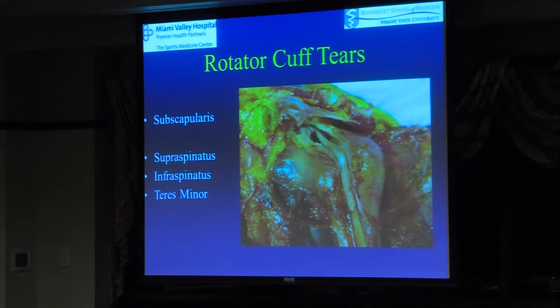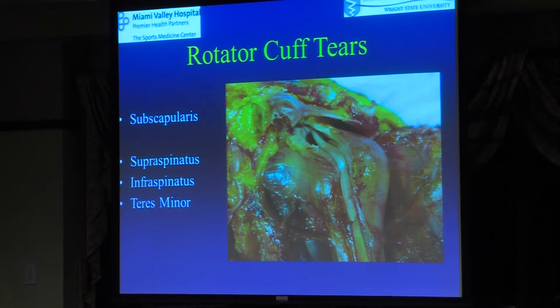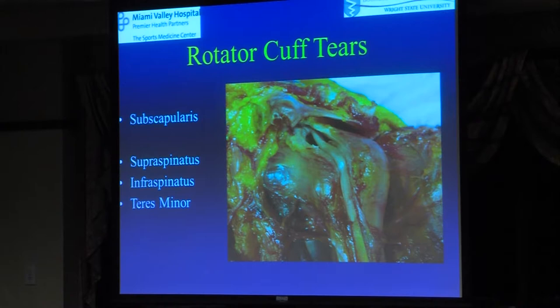Rotator cuff tears. One of the things we see most commonly in the office is rotator cuff pathology — whether it be impingement, shoulder pain, or a full-on rotator cuff tear. The rotator cuff muscles are: the subscapularis, the large muscle in front providing internal rotation strength; and superiorly from front to back, the supraspinatus, infraspinatus, and teres minor. The bicep tendon splits the subscapularis in the front.